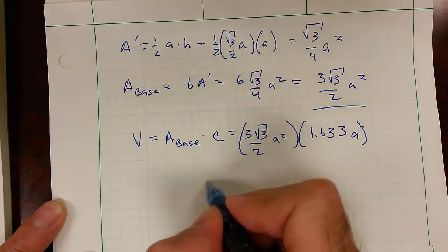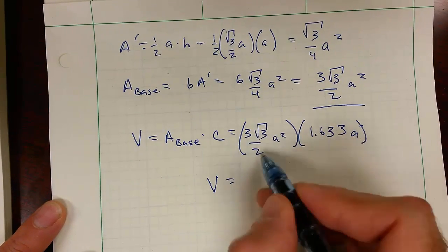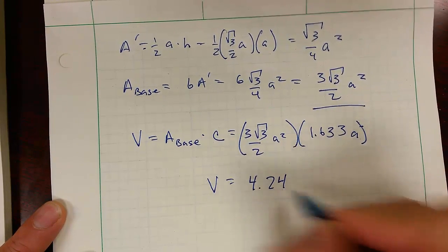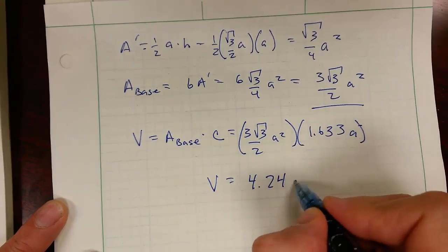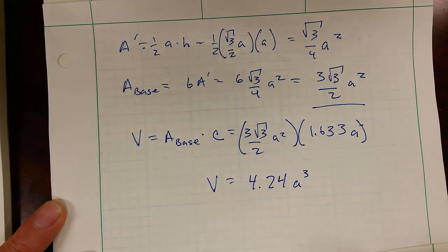And when I get my calculator out and multiply 3 times root 3 times 1.63 divided by 2, I come up with 4.24. I've got an a squared and an a, so I have a cubed. And that is the volume of a hexagonal cylinder.